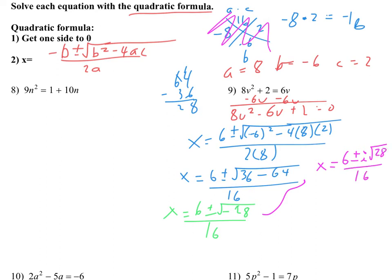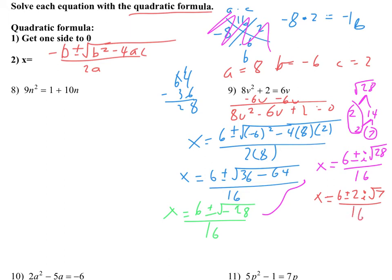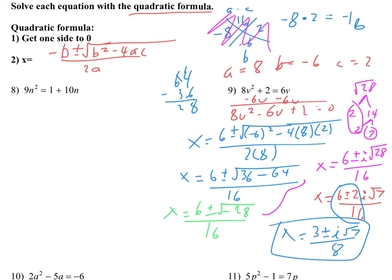So we deal with radical 28 with an i out front. Breaking down 28: we have twin 2s that go outside, and a loner 7 stays inside. So we get x equals 6 plus or minus 2i radical 7, all over 16. Last step is to reduce all three numbers — they can all divide by 2. This becomes 3 plus or minus i radical 7, all over 8. The 1 in front of i radical 7 doesn't need to be written.